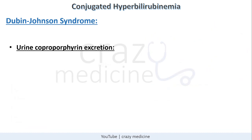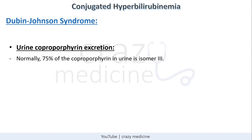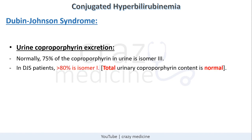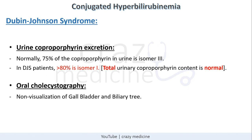Another diagnostic test is urine coproporphyrin excretion. There are two coproporphyrin isomers — 1 and 3. Normally, 75% of urinary coproporphyrin is isomer 3. But in Dubin-Johnson syndrome, more than 80% is isomer 1, though total urinary coproporphyrin content remains normal. Another test is oral cholecystography, which shows non-visualization of the gallbladder and biliary tree because the dye is not taken up.